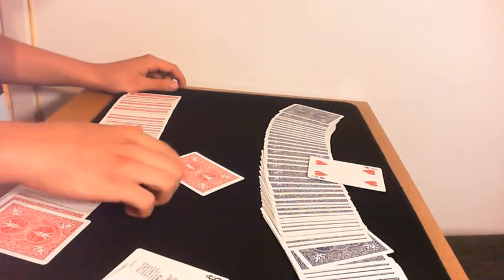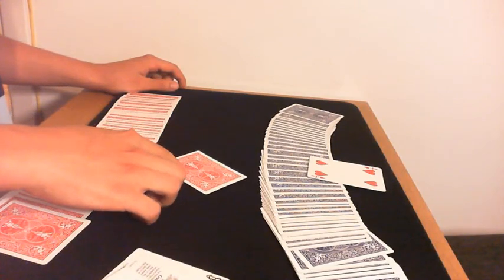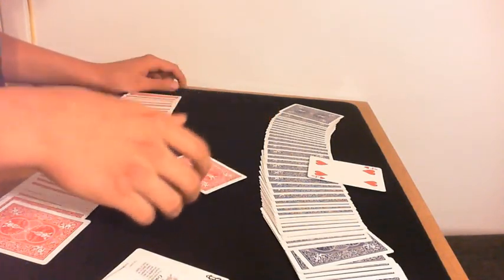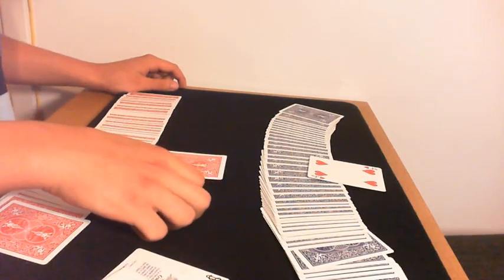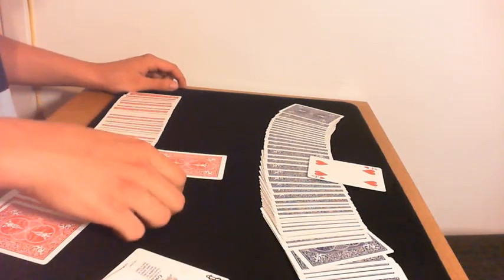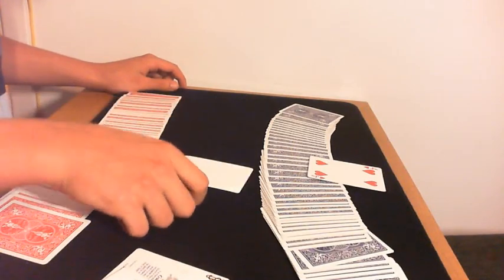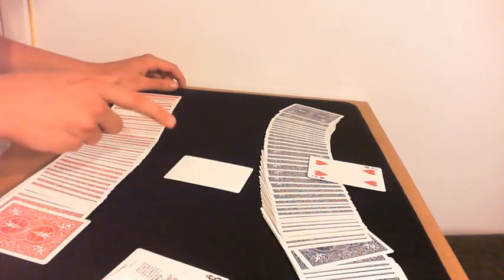And no matter what the card was there, the trick was done for him. I could have put a king of clubs and the magic was done for him. So that's why I decided to put any card. In fact, I put a blank card just there.